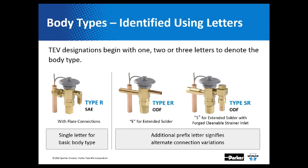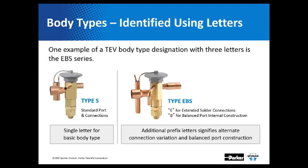This same nomenclature follows with our Q and BQ valves — the build valves that most of our wholesalers carry — as well as some of the other valves we have. Body types can have up to three letters. In this example we have a type S valve: the basic type S valve already has sweat-type connections; adding E as a prefix means extended ODF connections; and the B in the middle designates that it is a balance port valve.